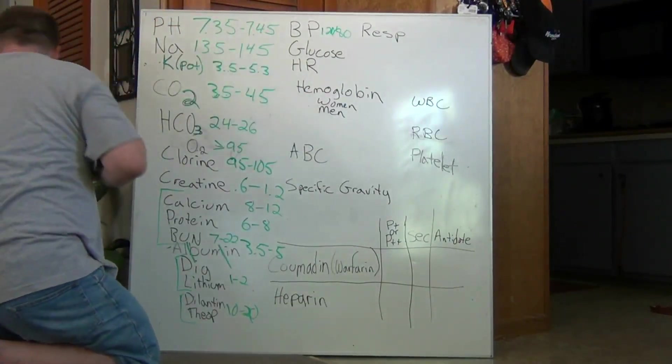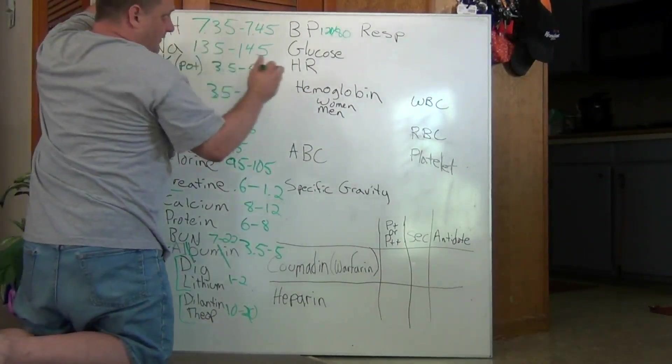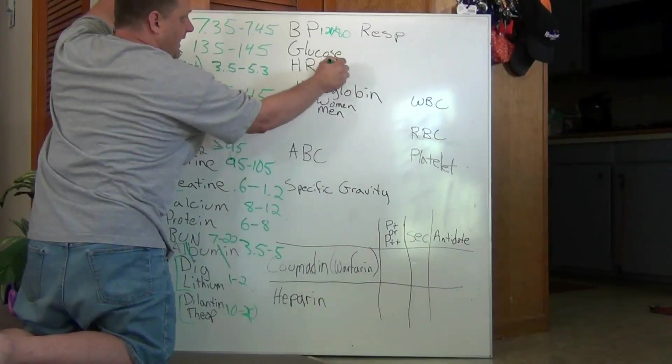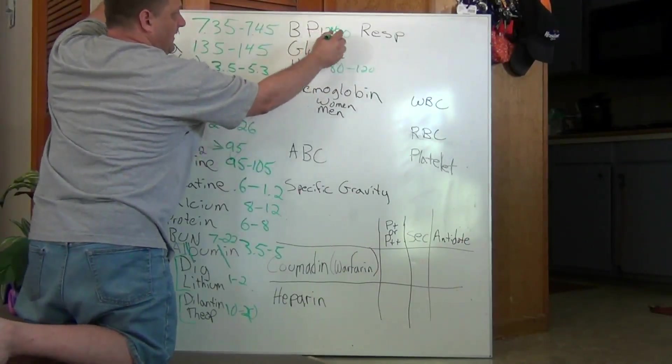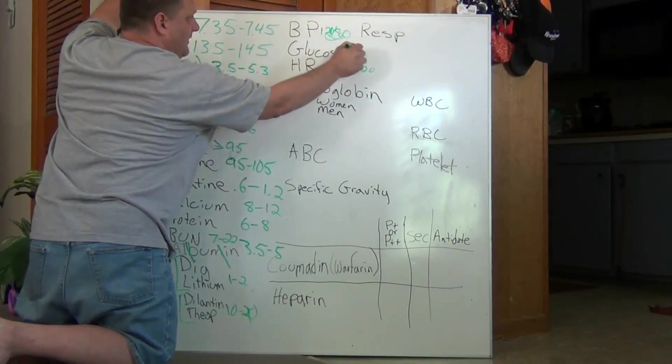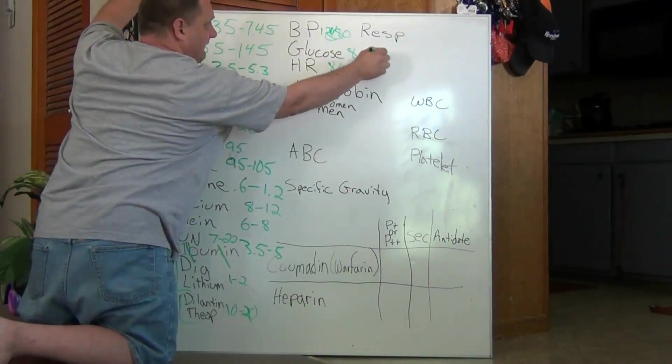We could say the heart rate would be 80 to 120. We'll just switch these numbers around. 80 to 120, and glucose it would be 120. For now.